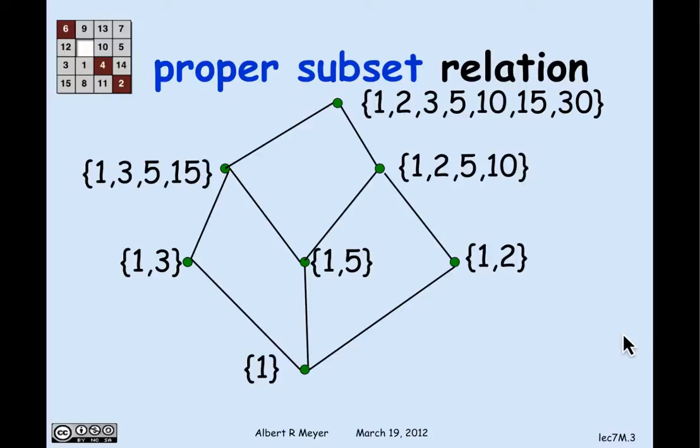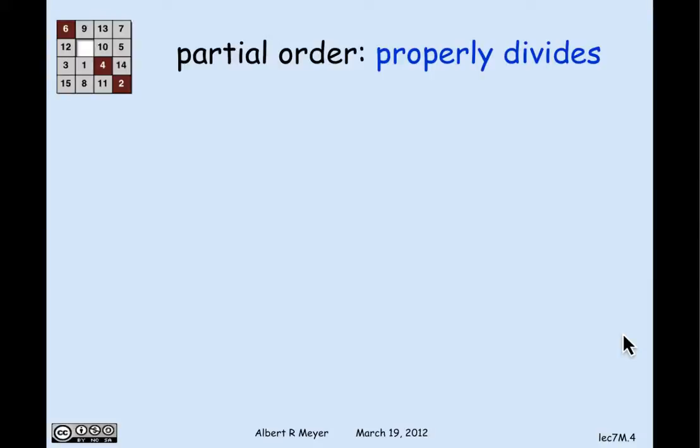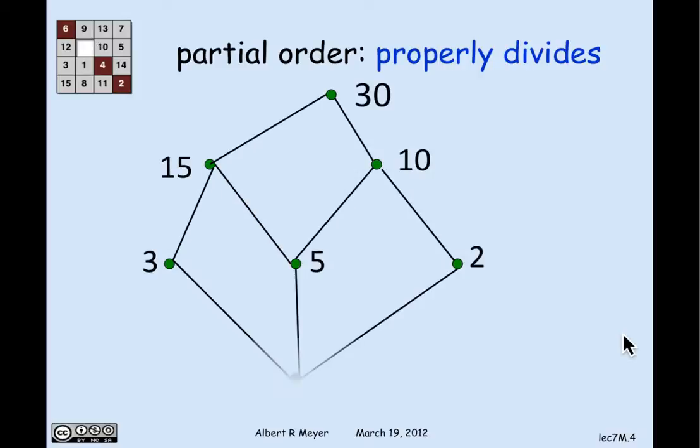Now, let's look at a very similar example of the proper divides relation on some numbers. So proper divides means A properly divides B if A divides B and it's not equal to B. And I'm interested in the proper divides relation on this set of seven numbers, 1, 2, 3, 5, 10, 15, and 30.